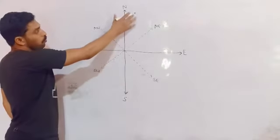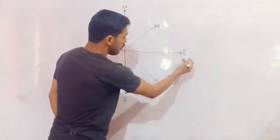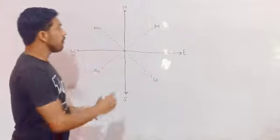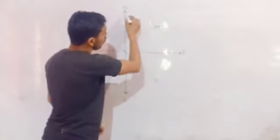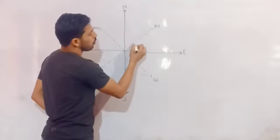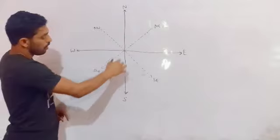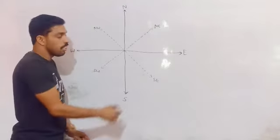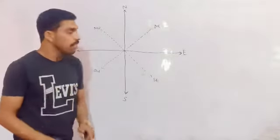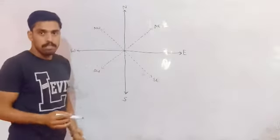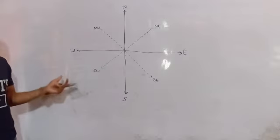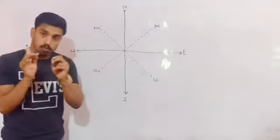This is your North, this is your East, and this is your West. Along with these four directions, the diagonal directions are called sub-directions. The direction between North and East is known as North-East. The direction between South and East is known as South-East. The direction between South and West is known as South-West. The direction between North and West is known as North-West. So, this covers all the basic directions.